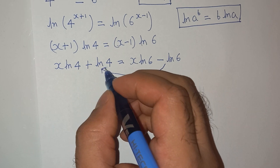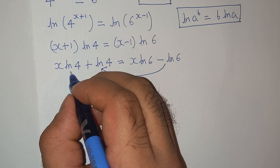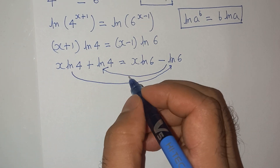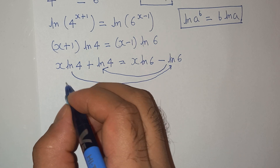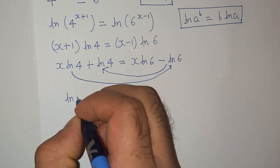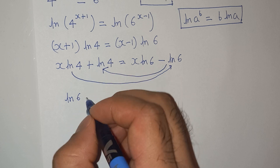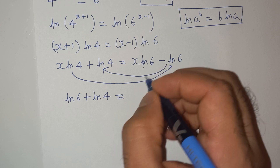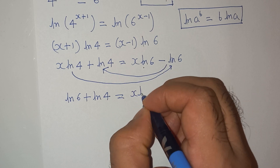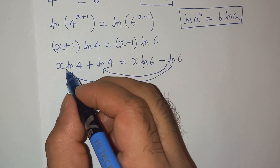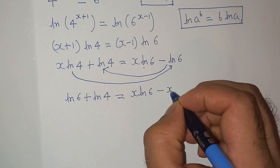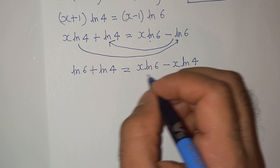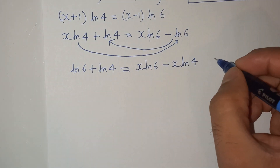Now I'm going to take the minus log 6 to the left side and x·log 4 to the right side. So on the left side we will have log 6 plus log 4, and on the right side it will be x·log 6 minus x·log 4.